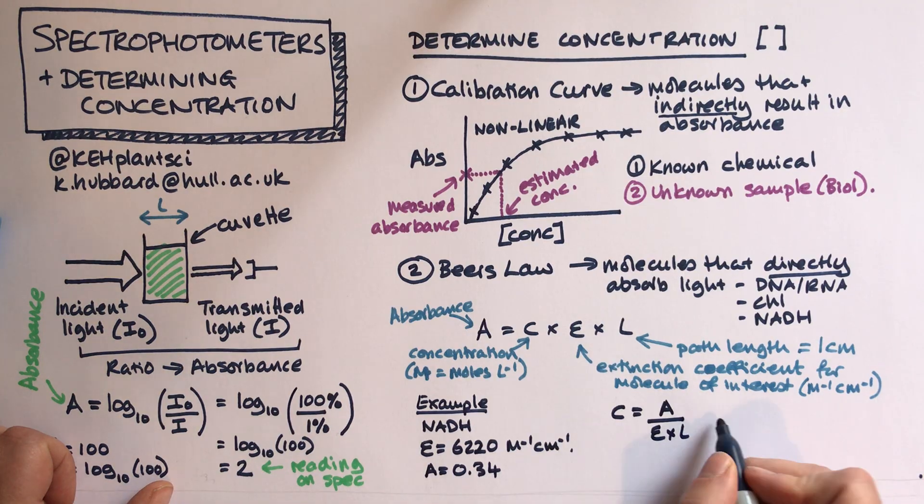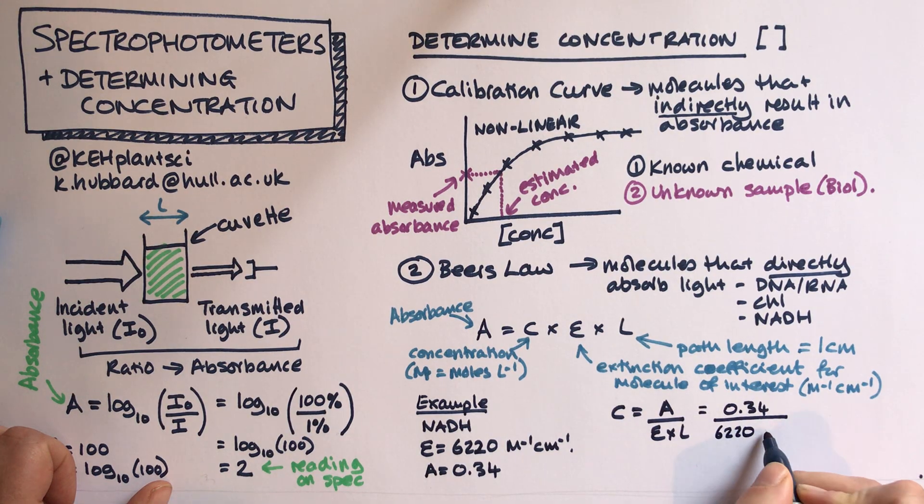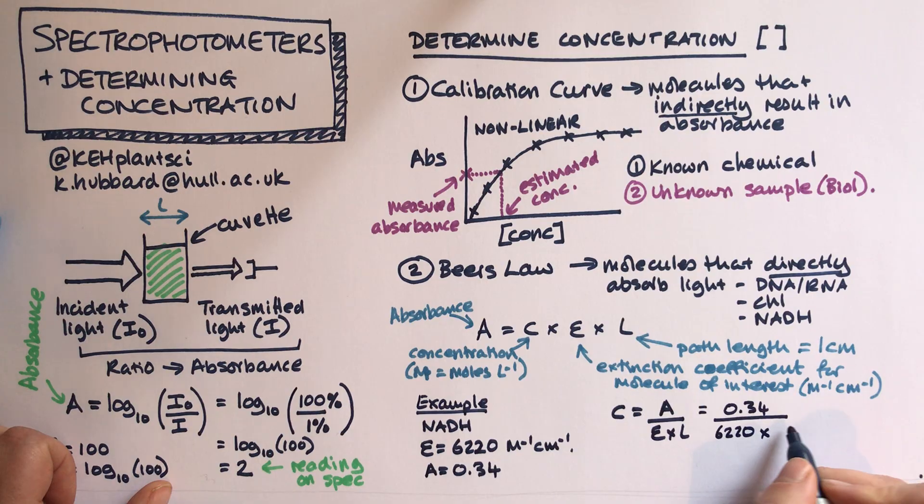If I rearrange that equation, it will be C equals A over epsilon times L. I can now substitute my numbers in. A is 0.34, epsilon is 6220 times by L, which is the path length which is one centimeter.